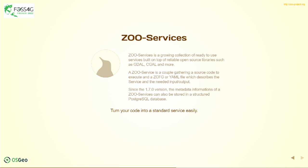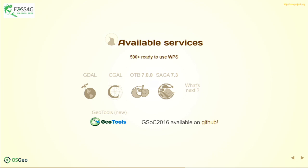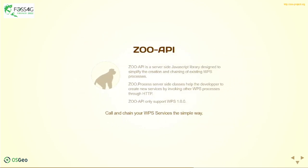For ZOO services, a service is a pair made of a ZOO configuration file — which can be in different formats, either our own ZCfg format or YAML — and since version 1.7 you can also store all the metadata directly in a PostgreSQL database or generate SQL code from your existing ZCfg. Here is a very simple hello world example, and here you can see what software is currently integrated within ZOO services: GDAL, the Orfeo Toolbox, SAGA GIS, and GeoTools, the latter done during GSoC in 2016.